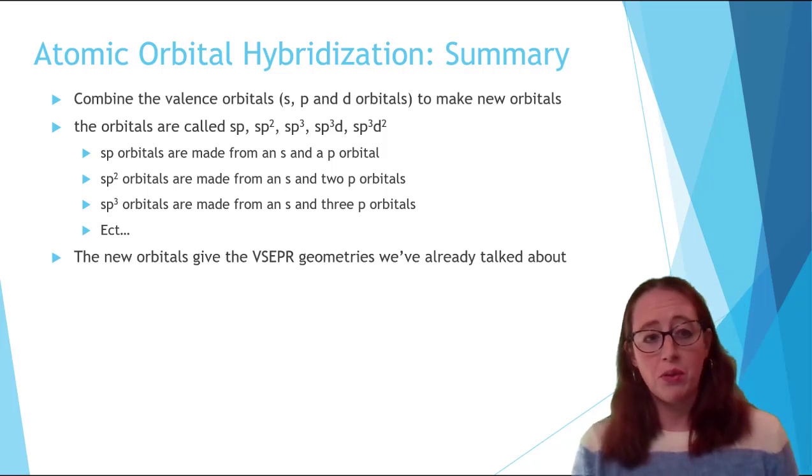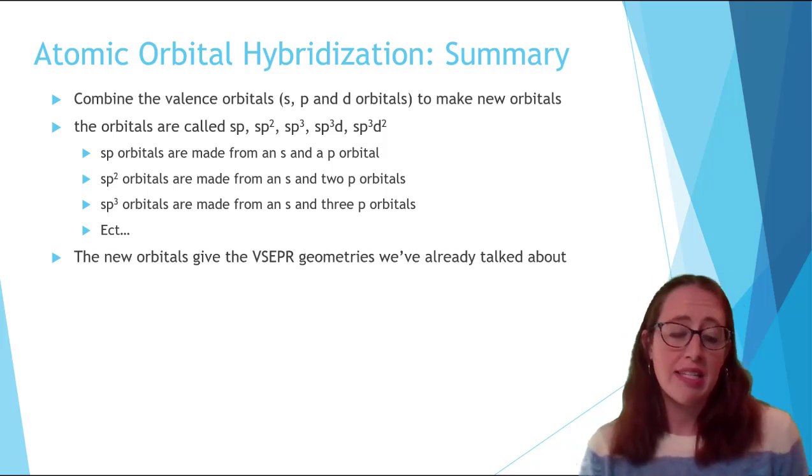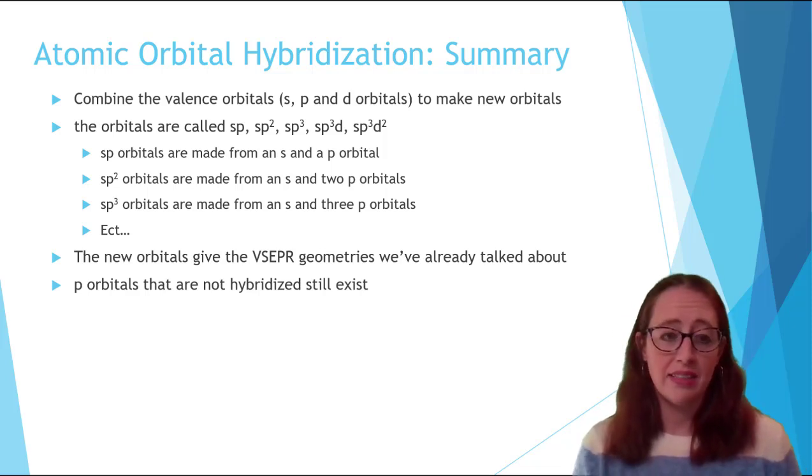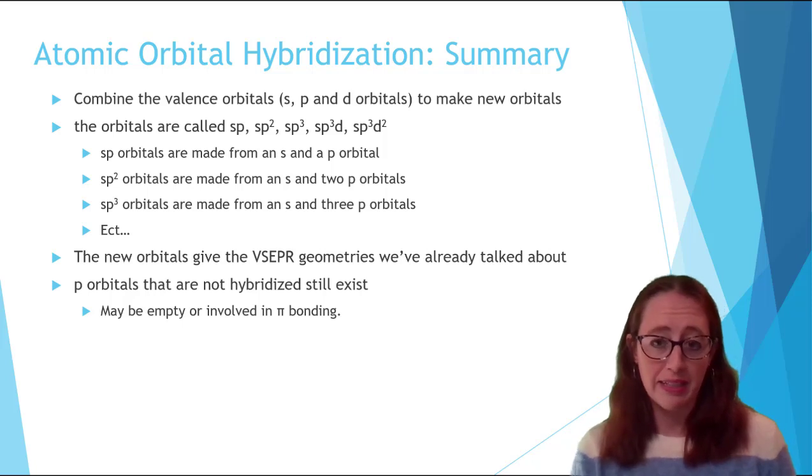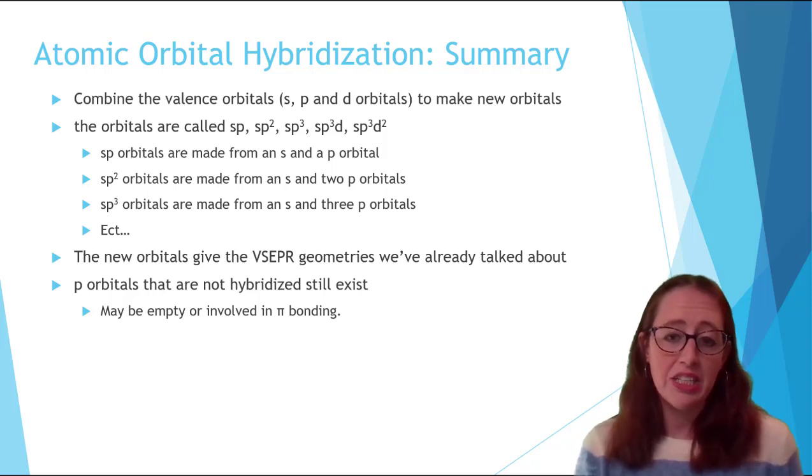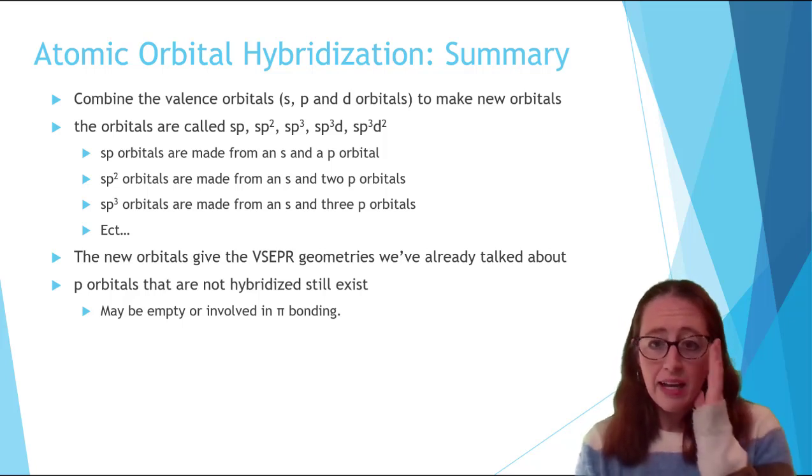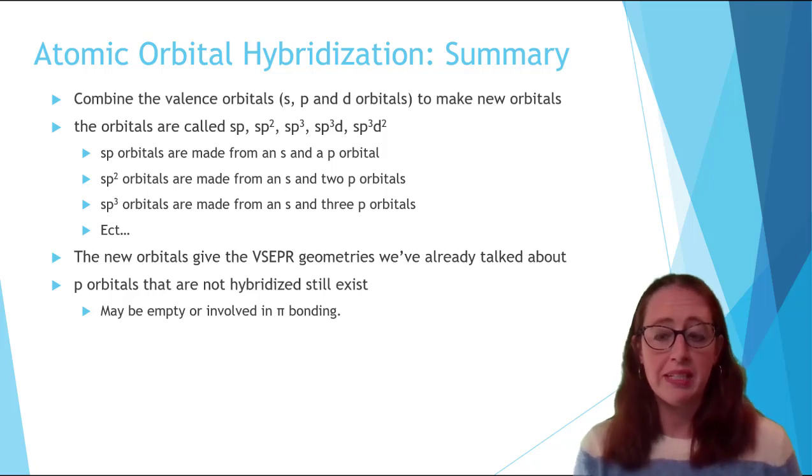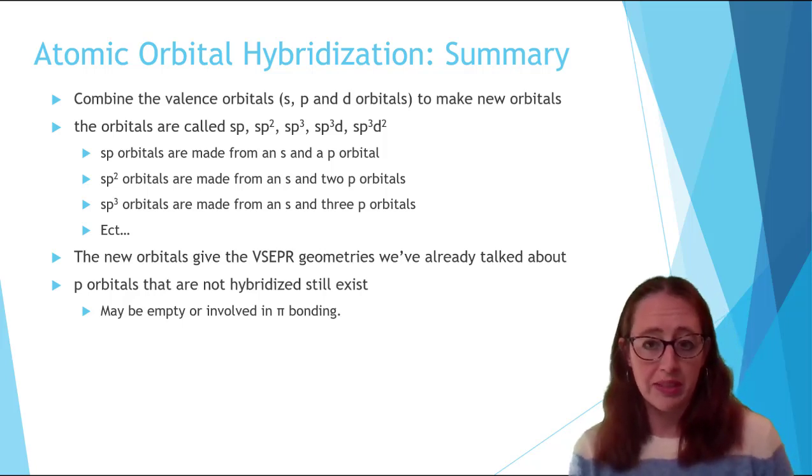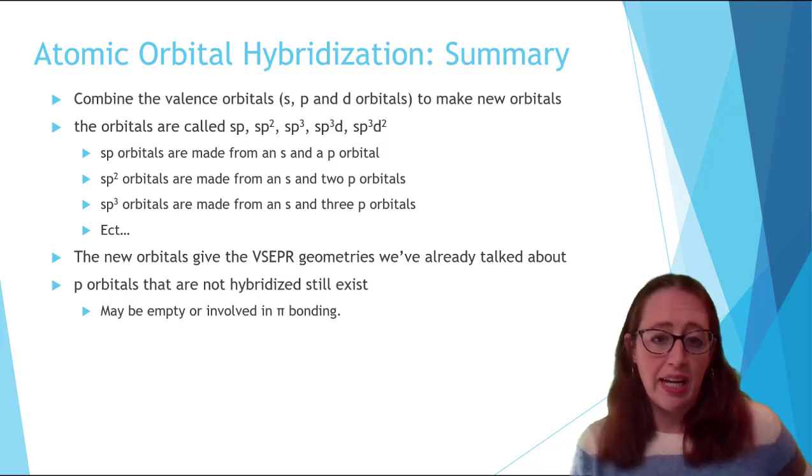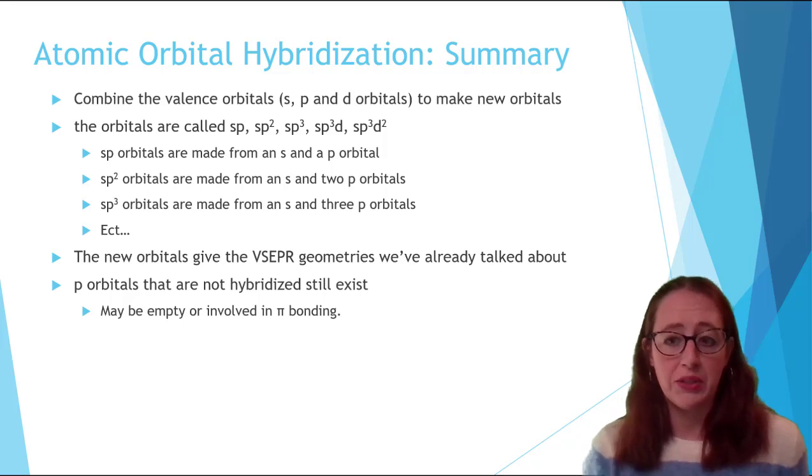The new orbitals will be able to give us the VSEPR geometries that we've already talked about. The P orbitals which are not hybridized still exist, and those are often used for pi bonding. We are going to look at each of these hybridization types in two ways. The first we'll be using electron energy diagrams, and think back to when we drew these and did electron configurations. This is one way of showing you how the orbitals combine, and I'll include a link to that video as well. We will also look at it in picture format so you can visually understand the combination.